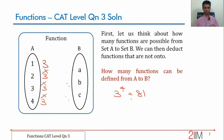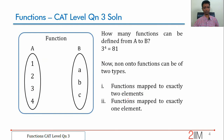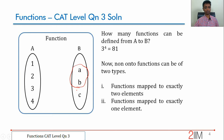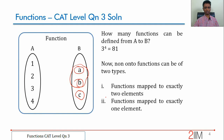Now we need to find the onto functions from these 81. I will do it slightly differently — let us call out the functions that are NOT onto, and subtract. A non-onto function means 1, 2, 3, 4 are all mapped, but they cannot be mapped to all three elements; they are mapped to only two elements or only one element.